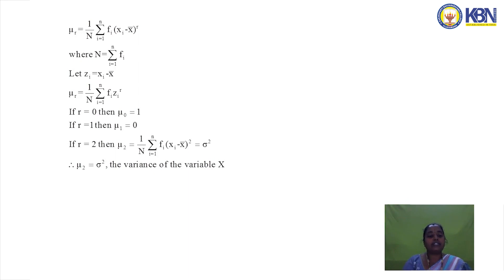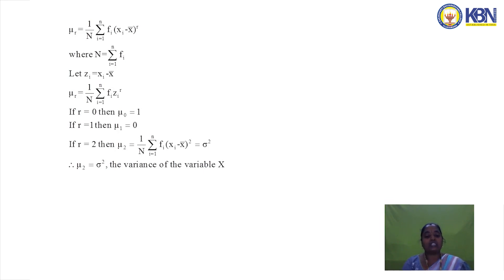When r = 0, μ0 = 1. When r = 1, μ1 = 0. When r = 2, μ2 = (1/N) Σfi(xi − x̄)², which is nothing but the variance. Therefore μ2 = σ², the variance of the variable x.